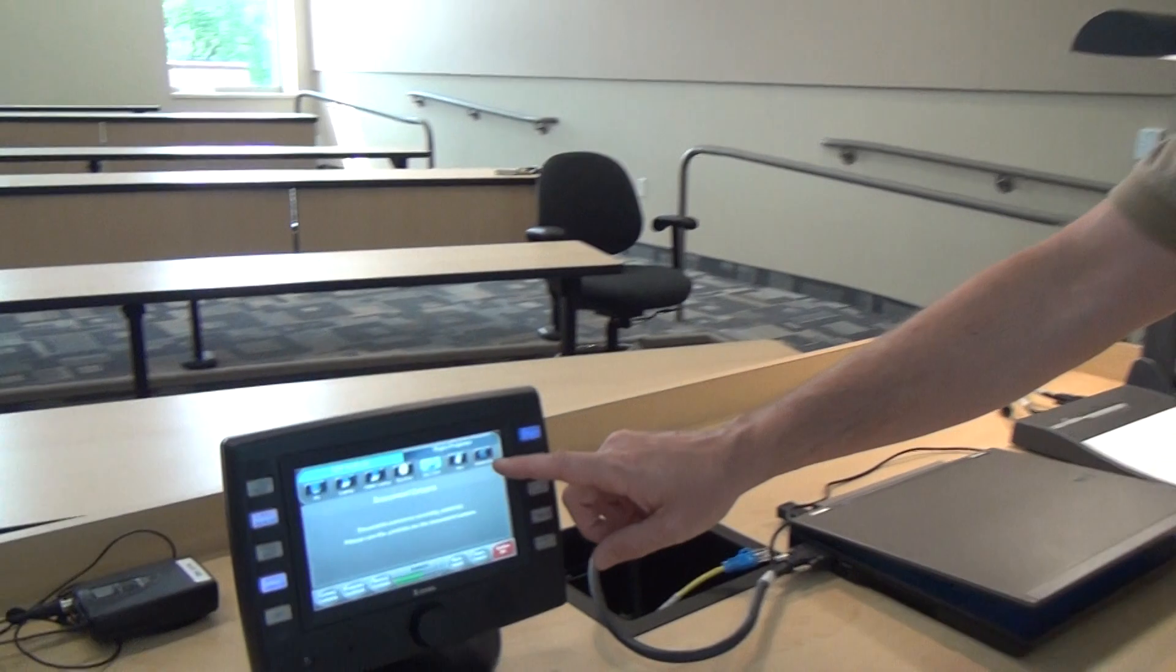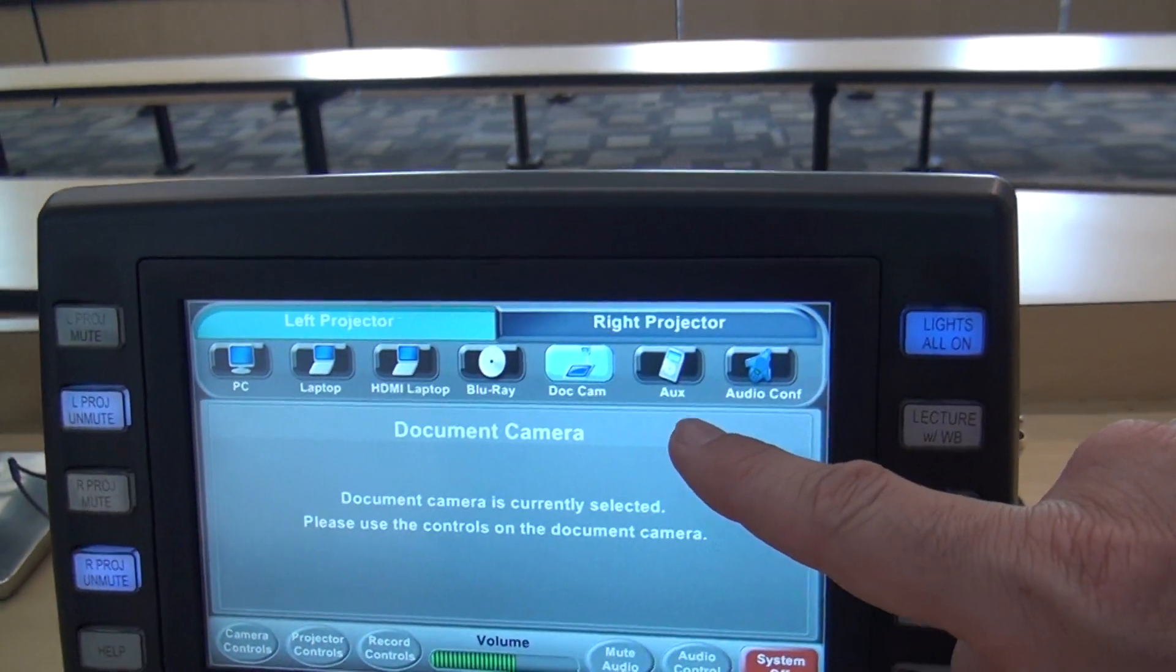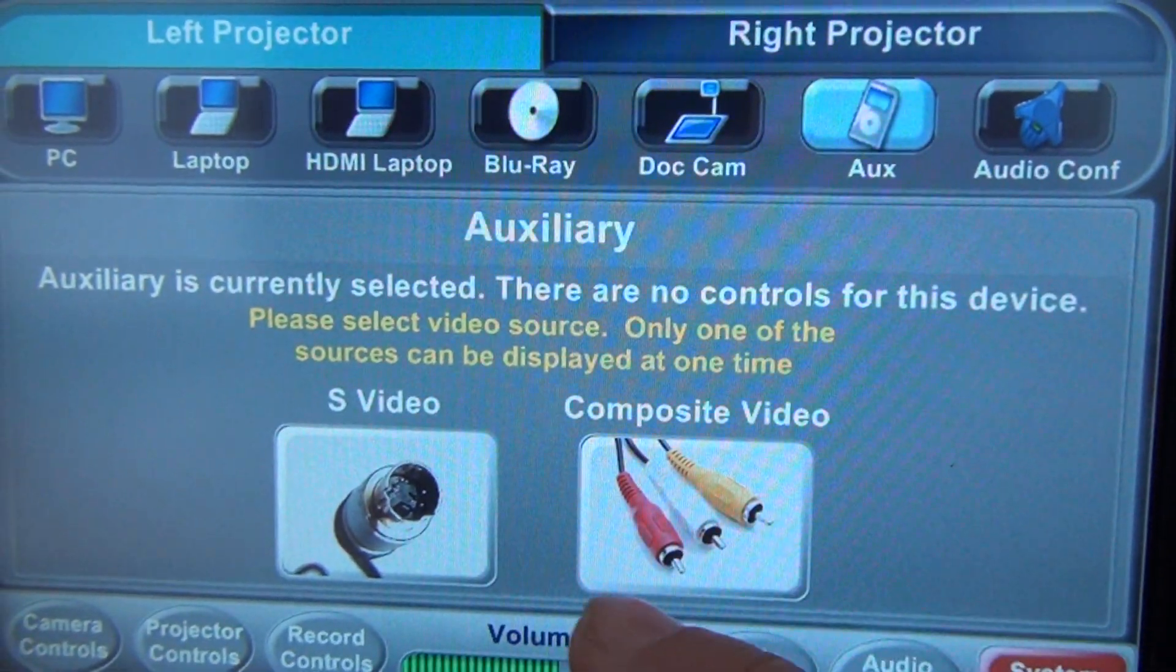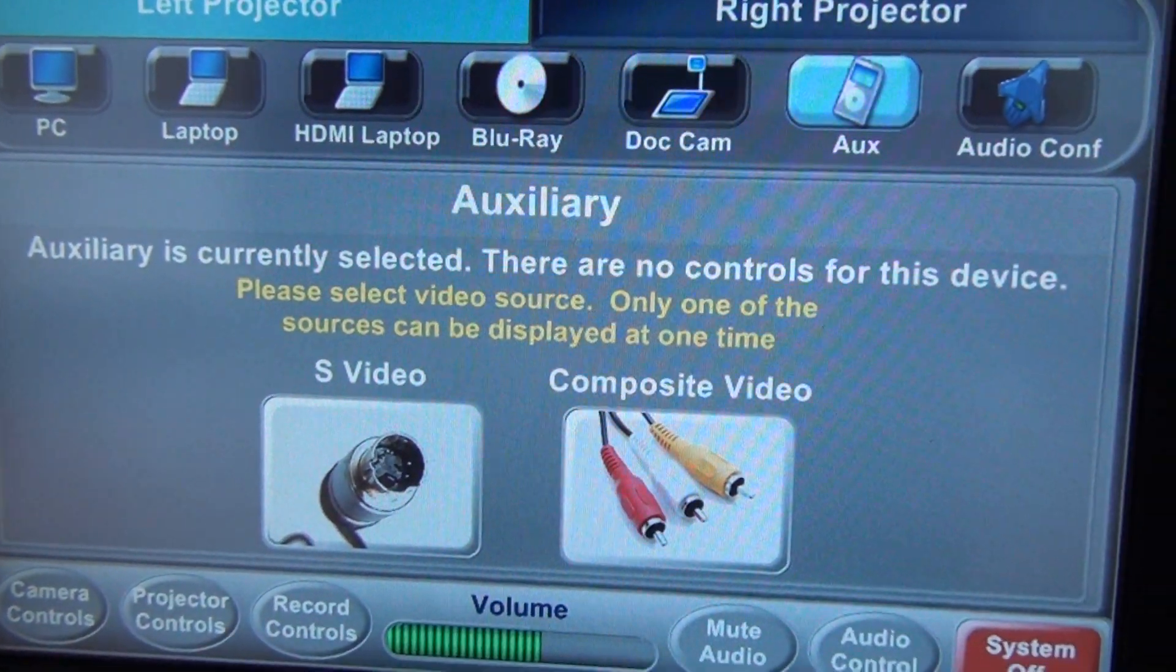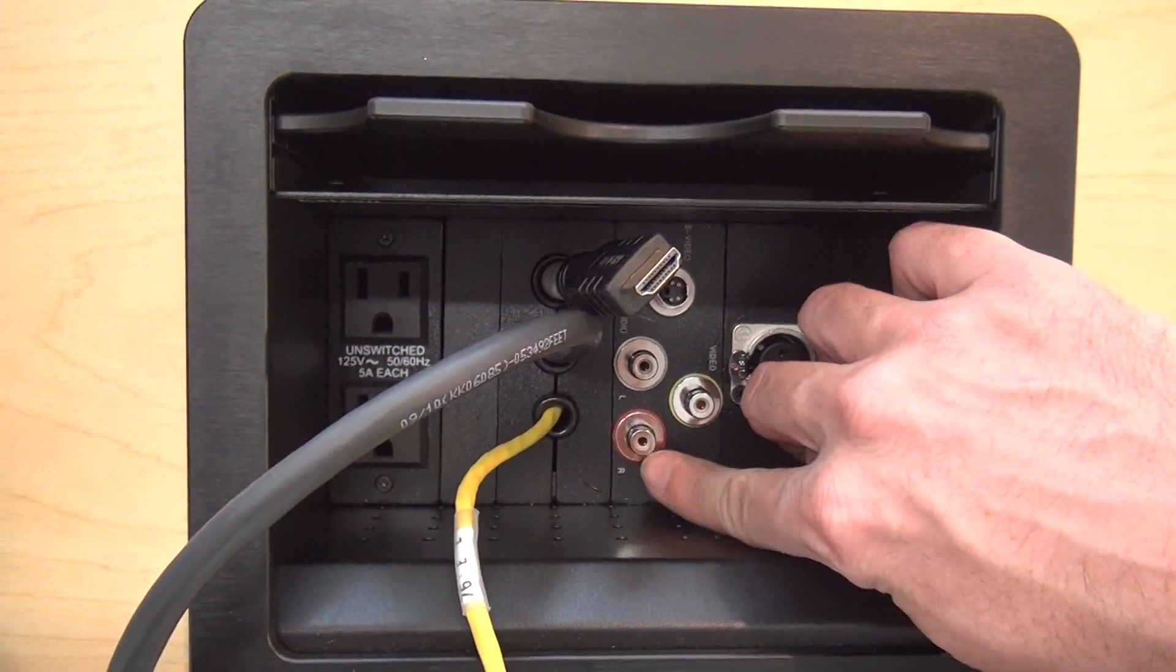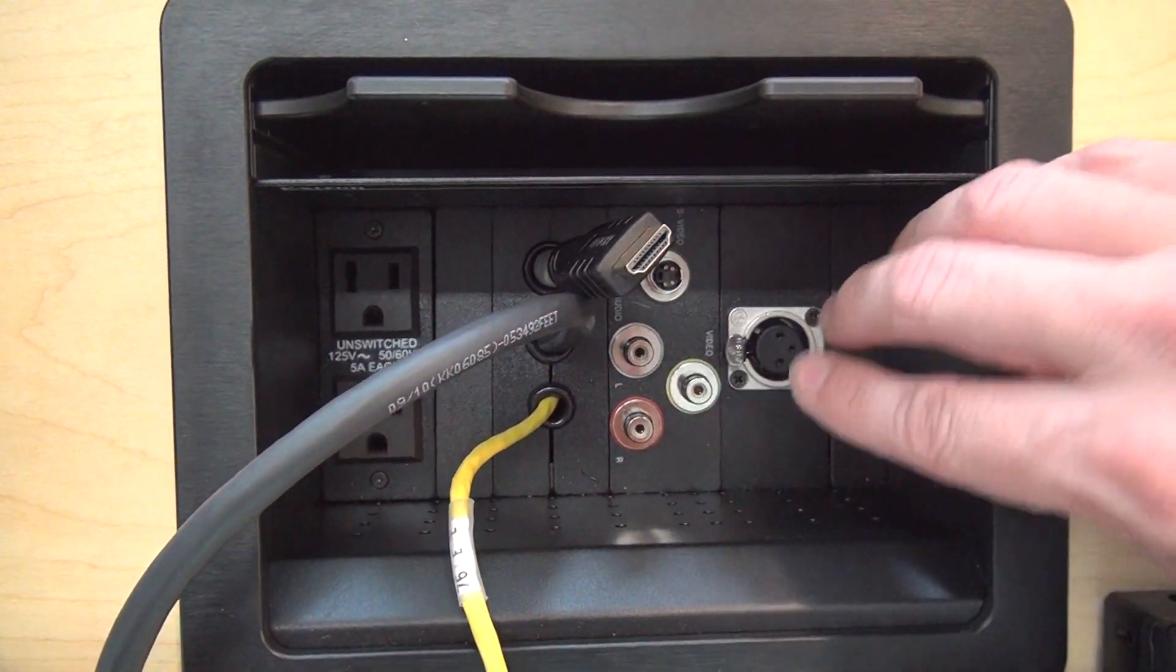The last thing on the source select that we'll talk about is the auxiliary button. When I hit the auxiliary button it gives me a little sub menu that asks if I want to use S video or composite video, and all those connections are back here in our cable cubby again. They share the audio so the audio is going to be used no matter which one you choose.